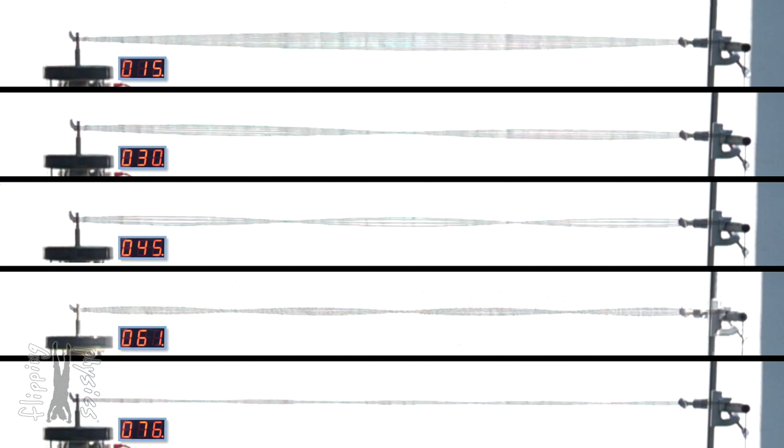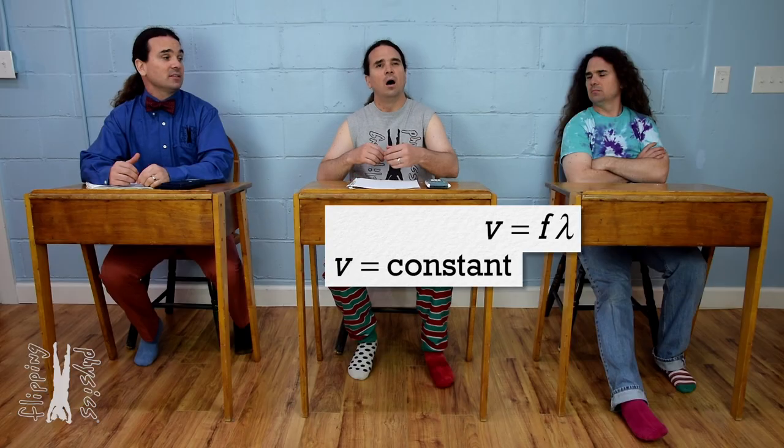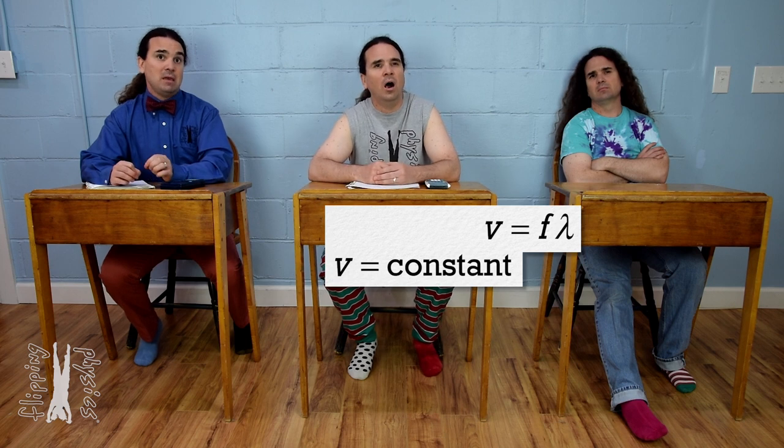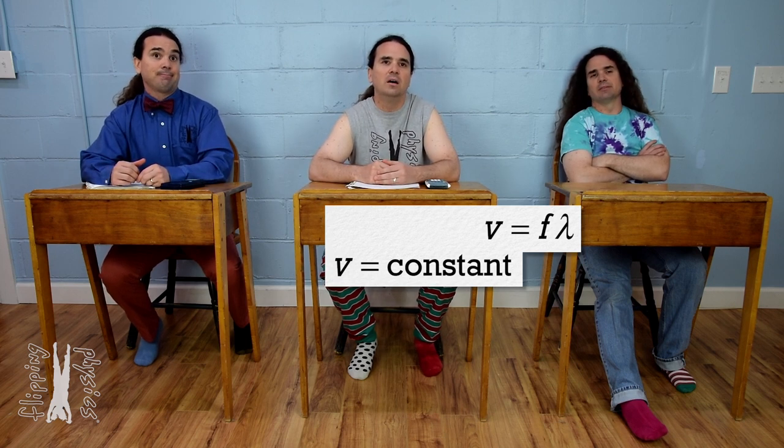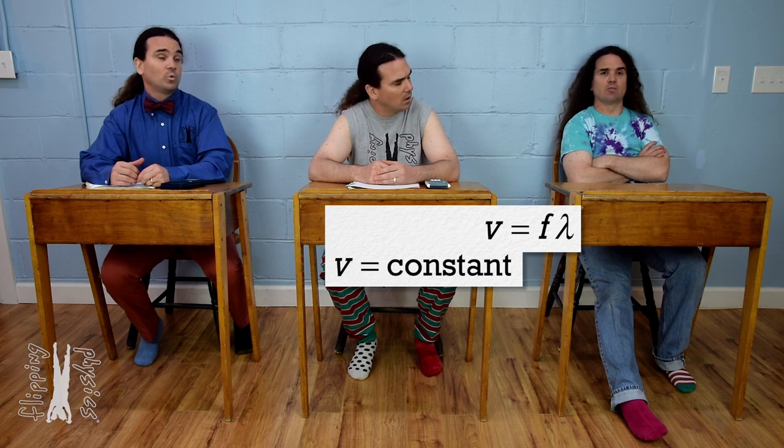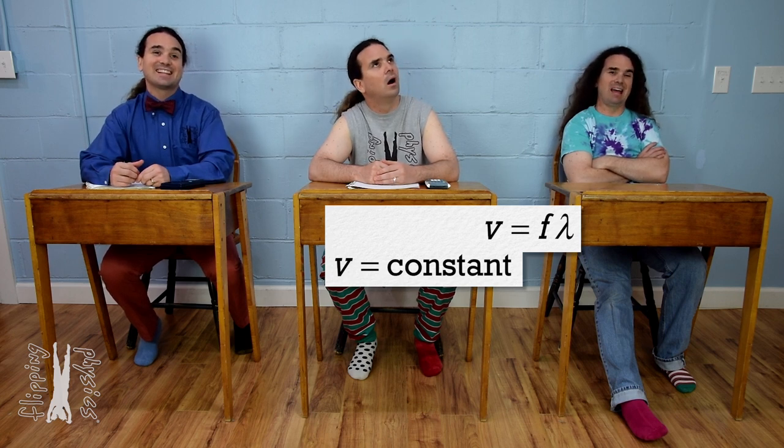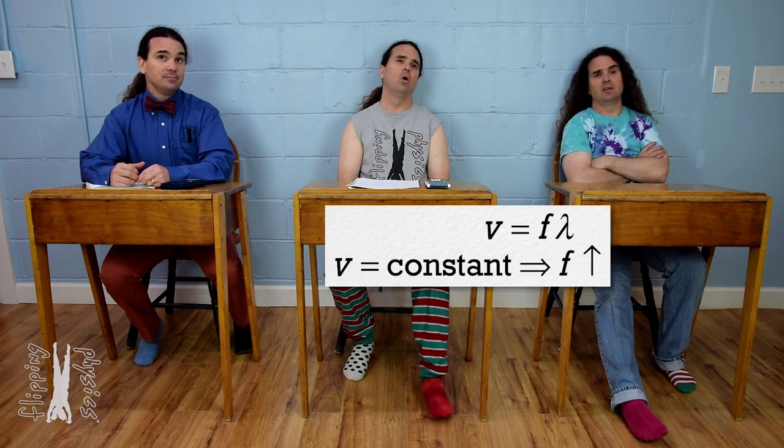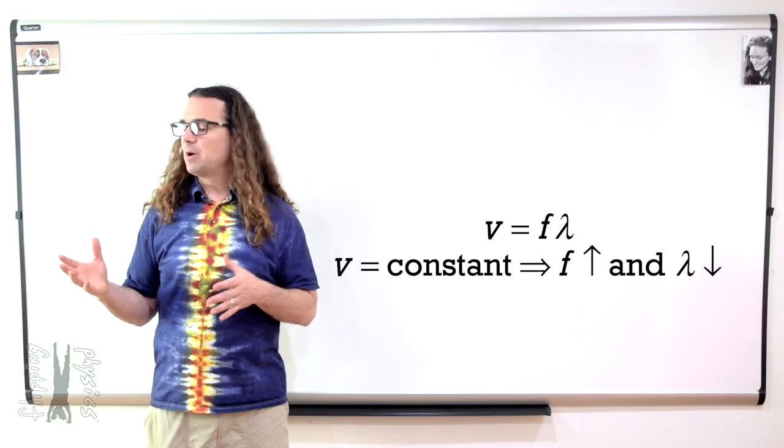Remember, the speed of the wave is going to be constant because the properties of the medium, the string, remain constant. Right, nice. That means, according to our equation for the speed of the wave, as the frequency increases, the wavelength of the wave must decrease. Correct, Bo.